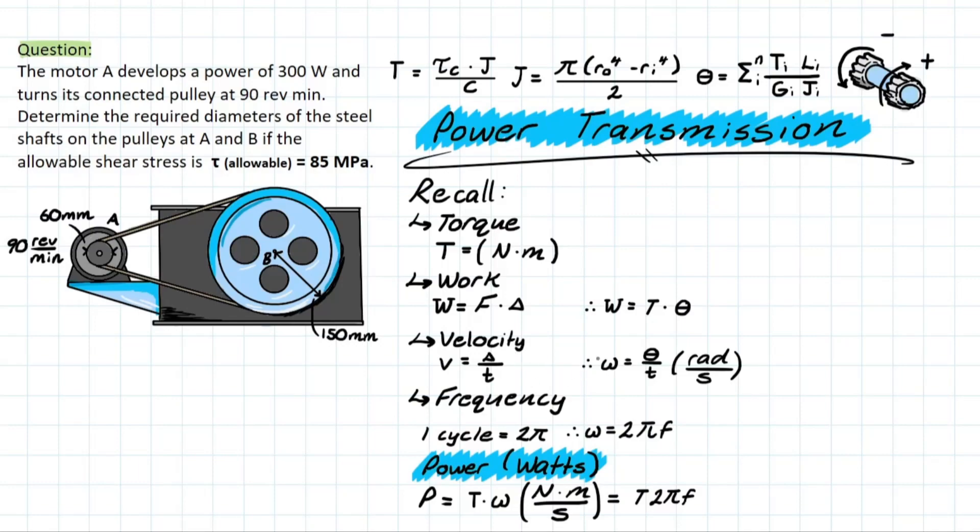I think the best way to start understanding what power is, is just explaining what we already know, which is torque, and looking at the units behind torque versus power. And you'll notice that the only difference here, for torque we have newton per meter typically, and for power we have newton meter per second. So what this is trying to tell us is that power is simply the work done over a certain period of time, or a certain unit of time. Now where is this coming from? Why does it make sense?